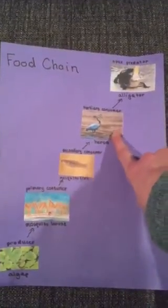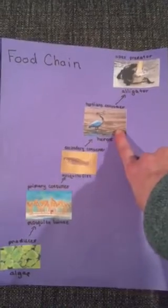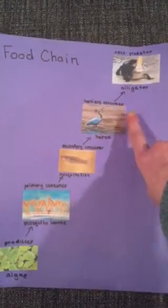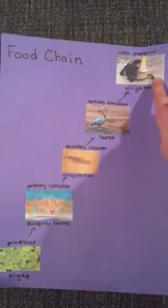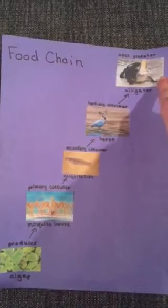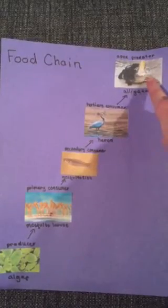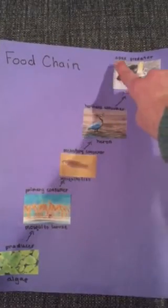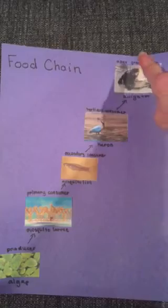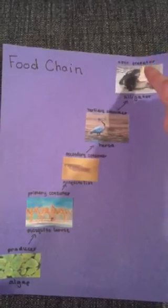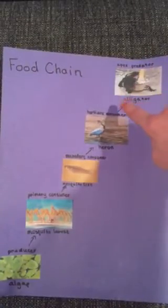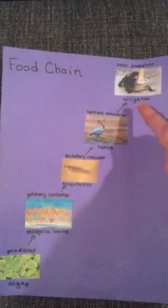Herons feed on mosquito fish, making the heron a tertiary consumer. Sometimes there are animals that have no natural predators and commonly feed on tertiary consumers. These are called apex predators, and a common example in a freshwater habitat is an alligator.